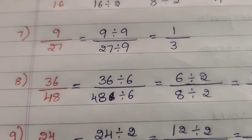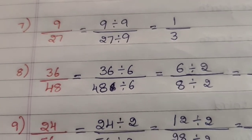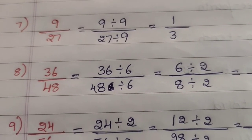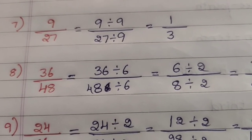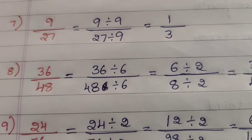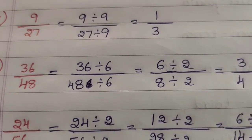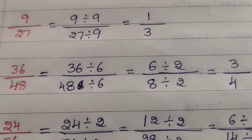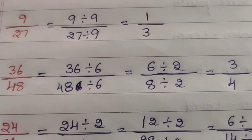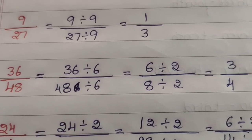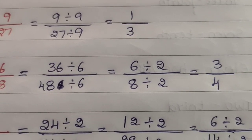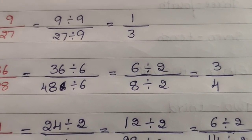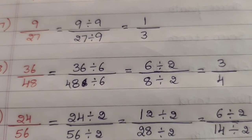Question 8 — 36/48: divide by 6: (36÷6)/(48÷6) — 6 sixes are 36, 6 eights are 48 — giving 6/8. Then divide by 2: (6÷2)/(8÷2) — 2 threes are 6, 2 fours are 8 — giving 3/4.